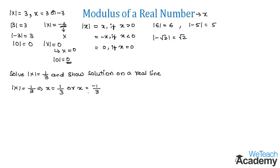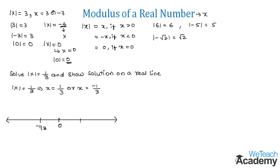Now let us represent both values of x on a number line. We place zero in the middle, mark negative values on the left-hand side — so we get minus one-third there — and on the right-hand side of zero we mark the positive value, one-third.